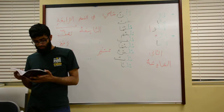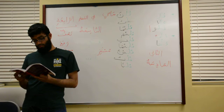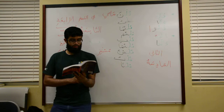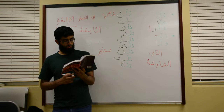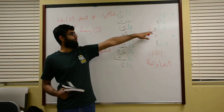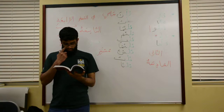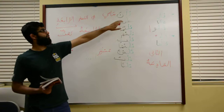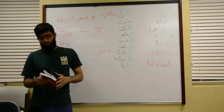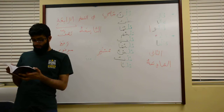The star means the subject is hidden. Zahabat — she went — the subject is a damir mustatir; the ta is a sign of its being feminine. Zahabu — they went — the subject is the waw. The alif after the waw is not pronounced, so it's zahabu. Zahabna — they, feminine plural, went — the subject is the nun.